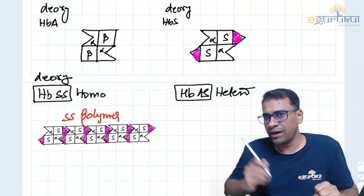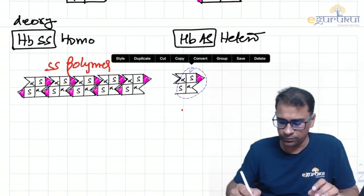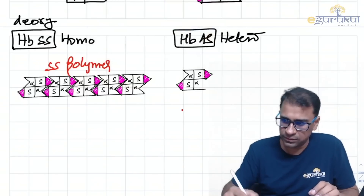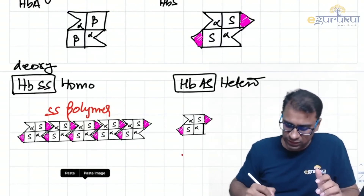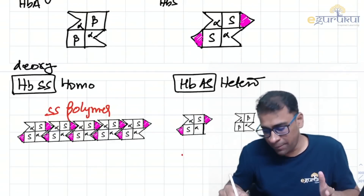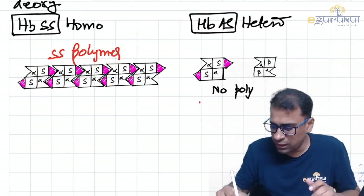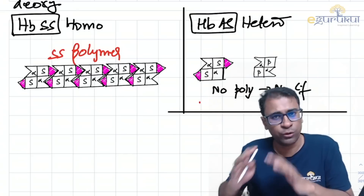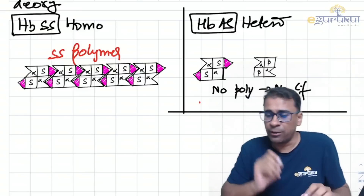In the AS heterozygous case, if the first molecule is S and the second is A (deoxy HbA), the deoxy HbA cannot attach because its beta chain does not have a sticky patch. So deoxy HbS and deoxy HbA show no polymer formation and therefore no clinical features. This is very important: HbA prevents polymerization, which is why heterozygous patients have no clinical manifestations.